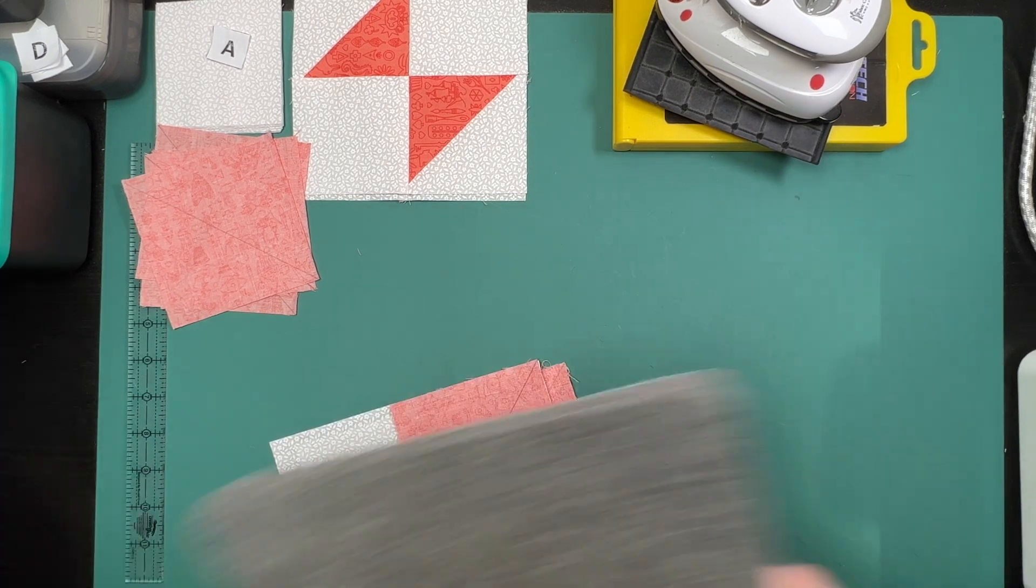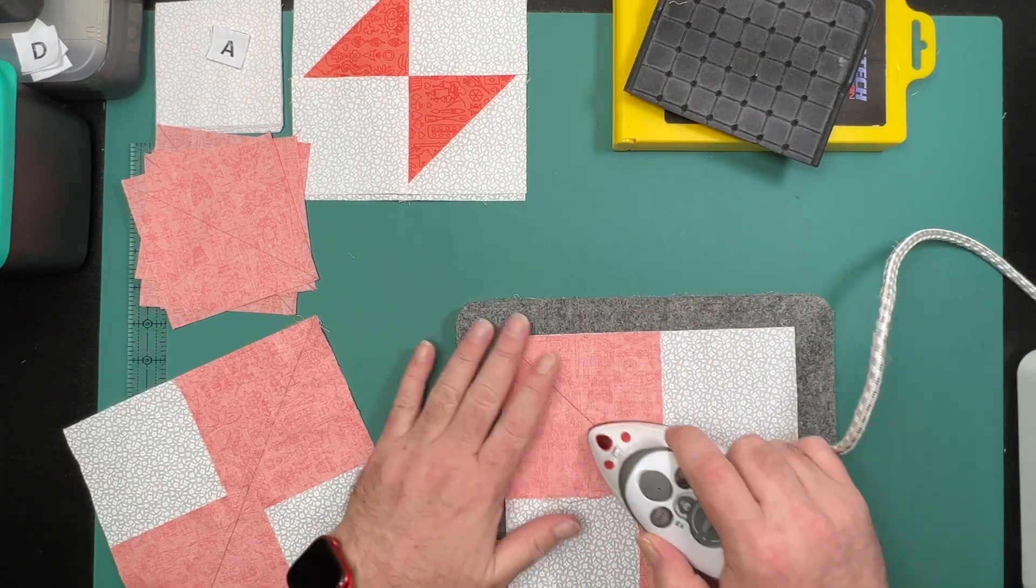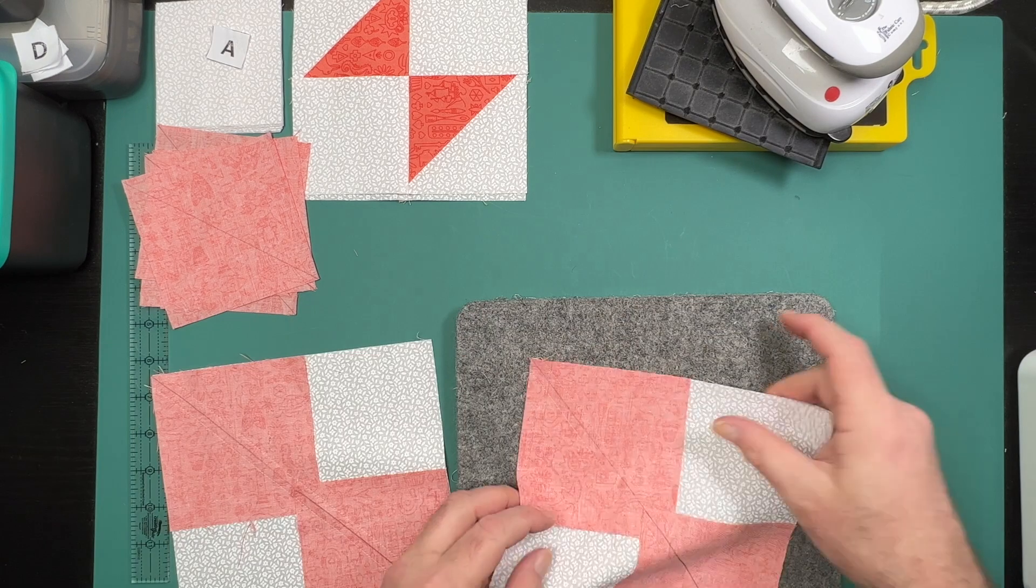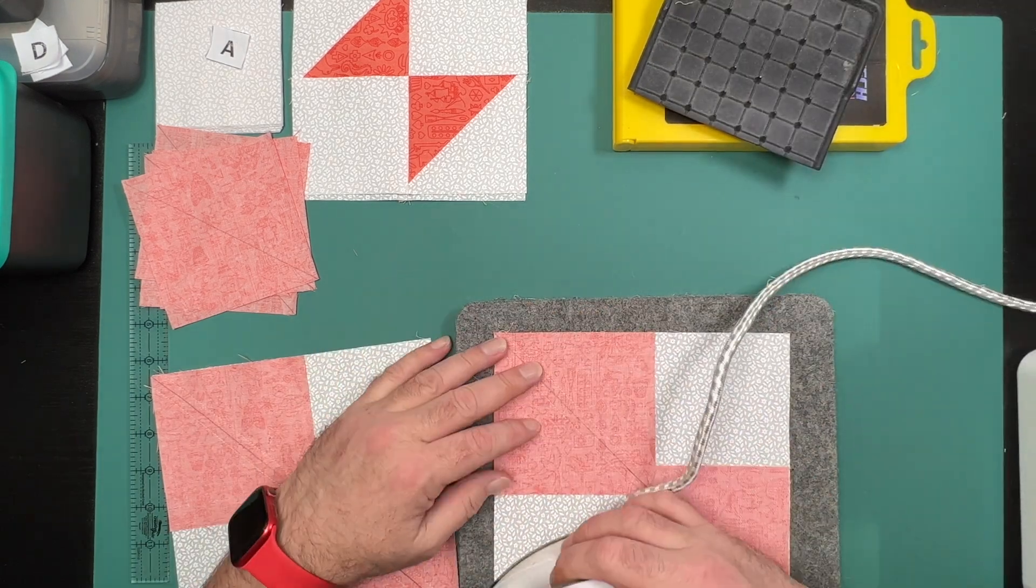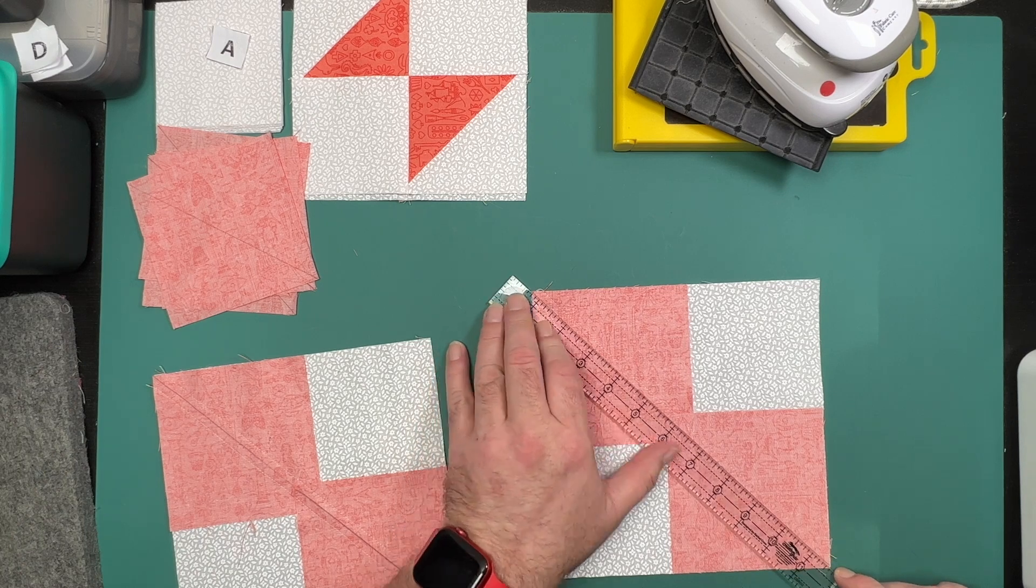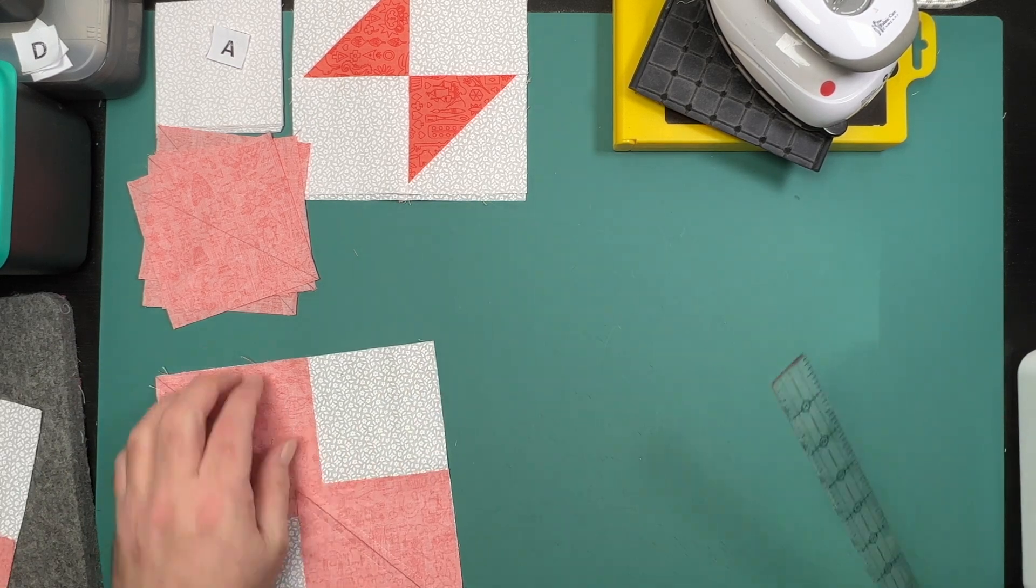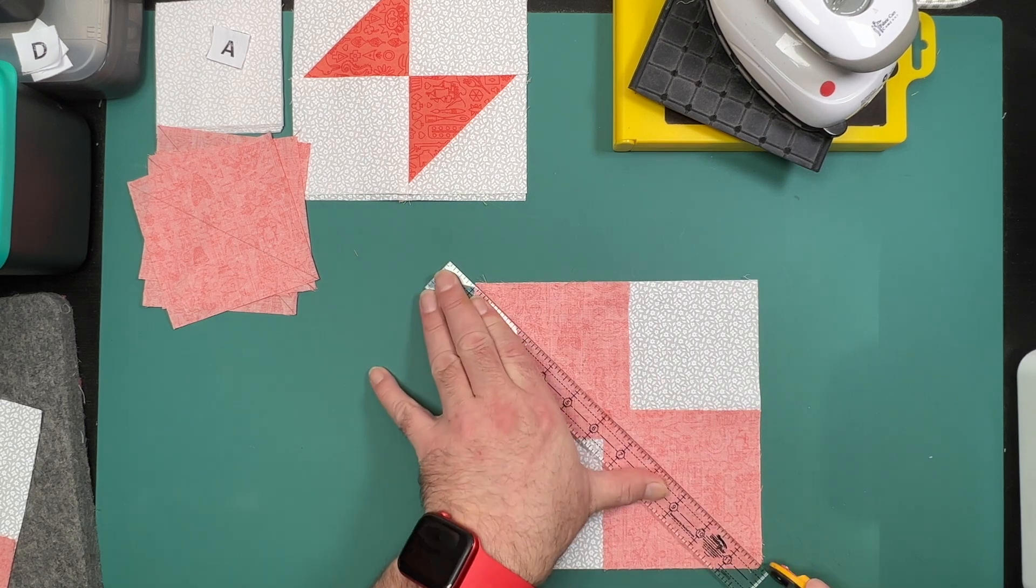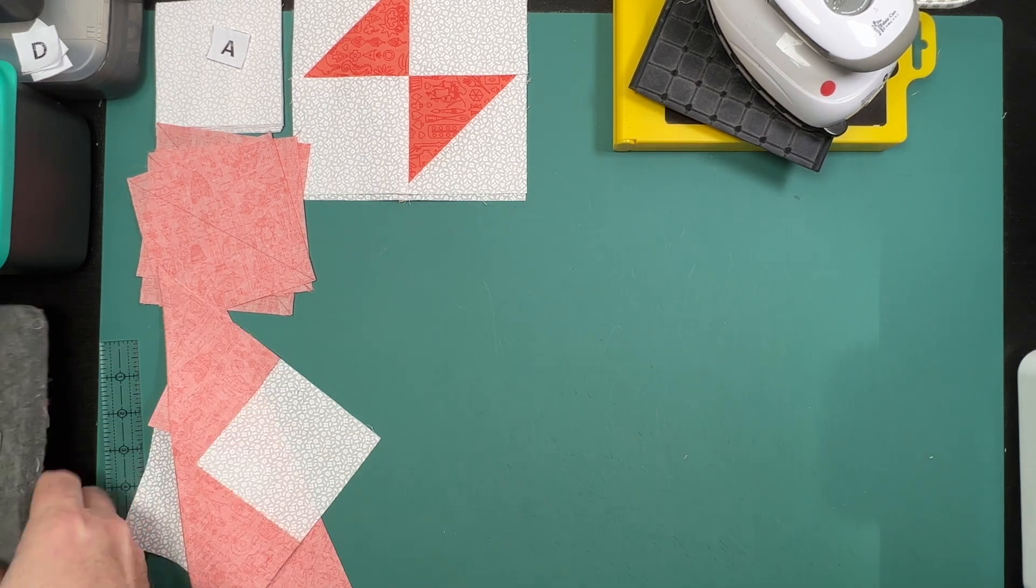With that now done, I just like to give these a quick press first to set the seams before cutting them in half along our drawn line and then pressing all of our peaks of the units up away from the large white triangle.